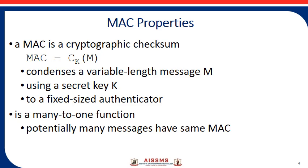MAC is not a digital signature since both the sender and receiver share a key and could recreate it. It is known as a cryptographic checksum generated by a function C, and it is appended to the message at the source at a time when the message is assumed or known to be correct. The receiver then authenticates the message by recomputing the MAC.